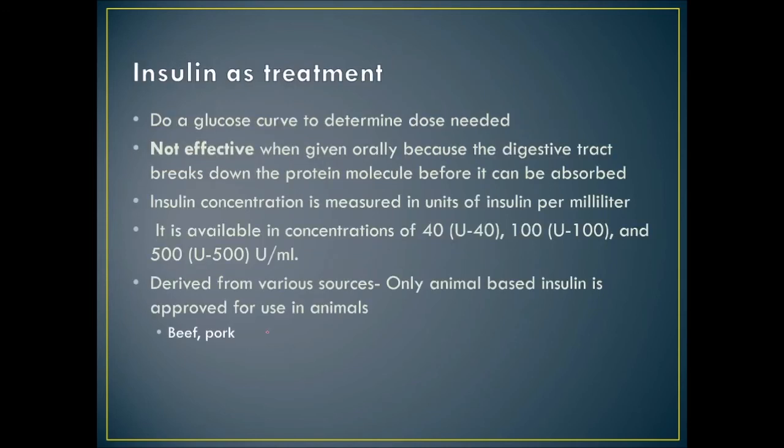Insulin is derived from various sources. Only animal-based insulin — beef and pork — is approved for use in animals, though human-based insulin is used to initiate treatment. Short-acting regular insulin is made from zinc insulin crystals and is used to treat diabetic ketoacidosis until blood glucose is reduced and the animal is stable.